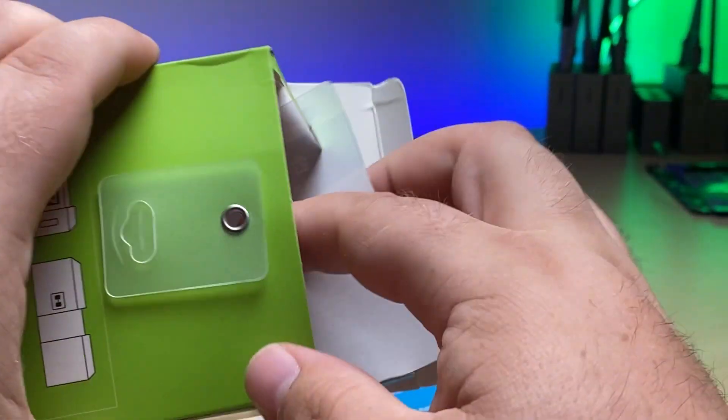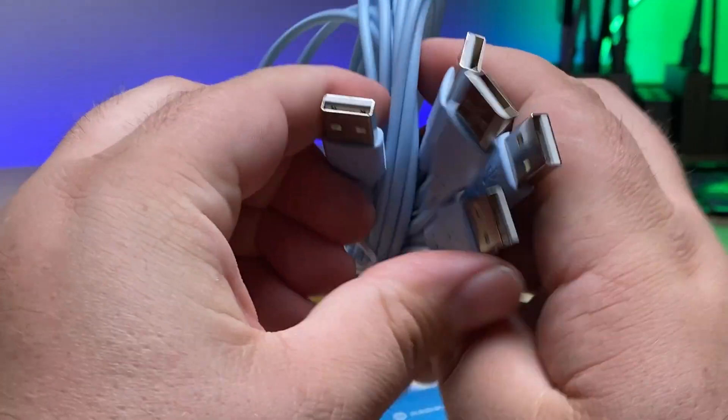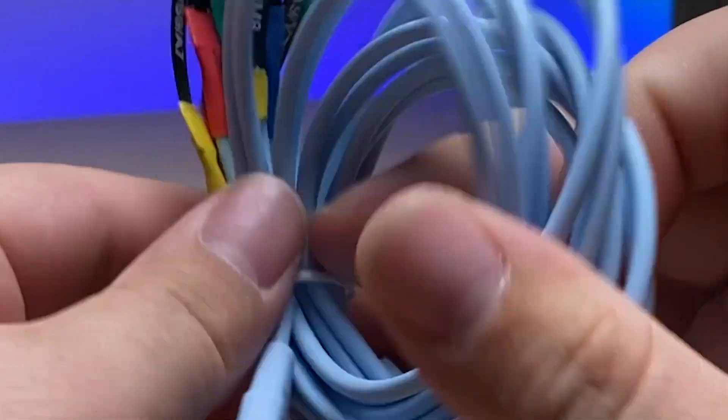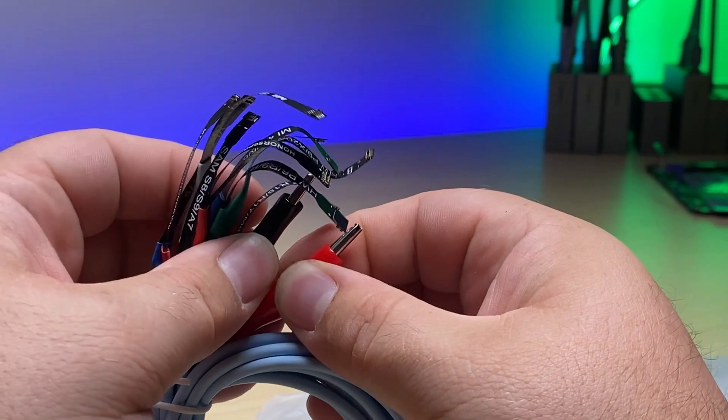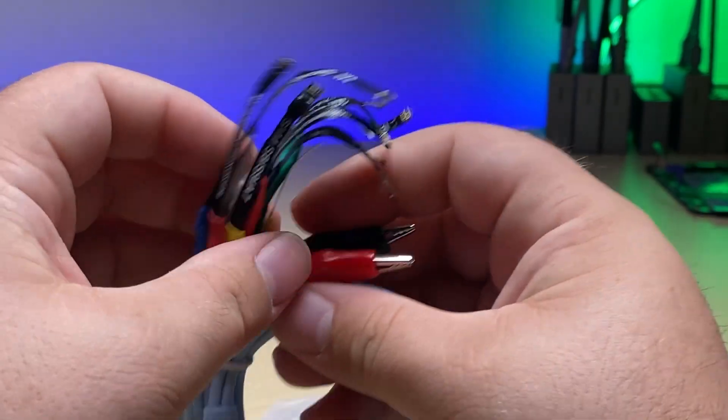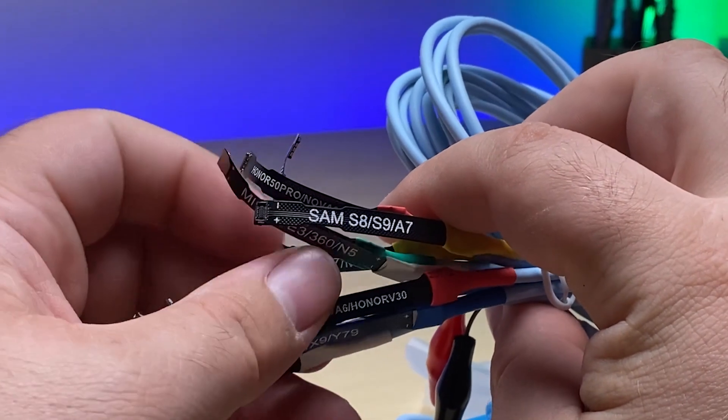Also in the box we have the cables themselves. Looks like we've got six different cables with a variety of connectors. We've got our standard alligator clips giving you the positive and the negative side of things from the power supply and all of these different models.